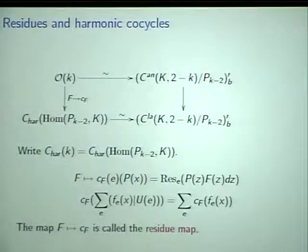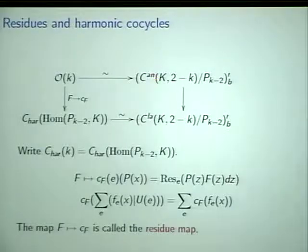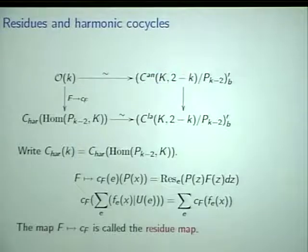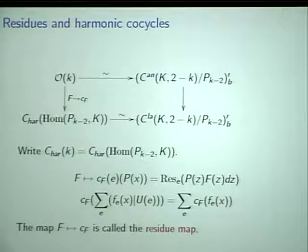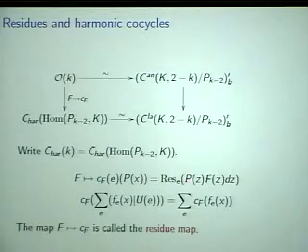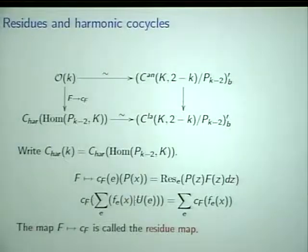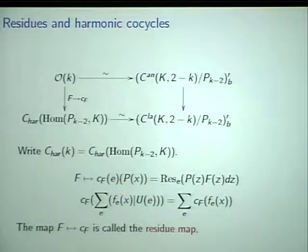Inside the analytic functions we have the locally polynomial functions. In the case k equals 2, these are just the analytic functions modulo constants, and these are the locally constant functions modulo constants. If you have a linear form on this space, you can restrict it to the subspace. That's what the vertical map is — restriction of continuous linear functionals to the subspace. And this map is the residue map. If I have a function, I can compute its residues: I take the function and an annulus corresponding to an edge, multiply the function times the polynomial times dz and take the residue.